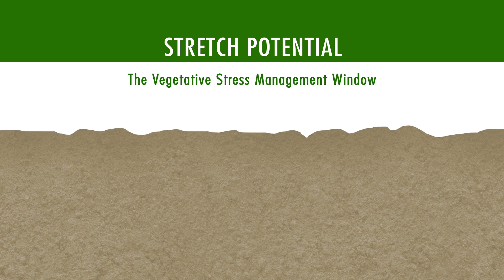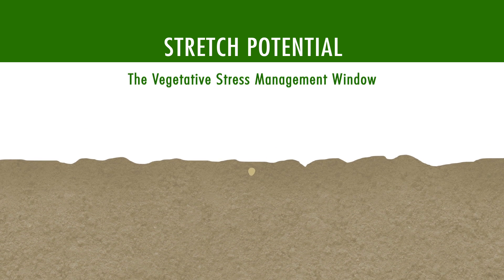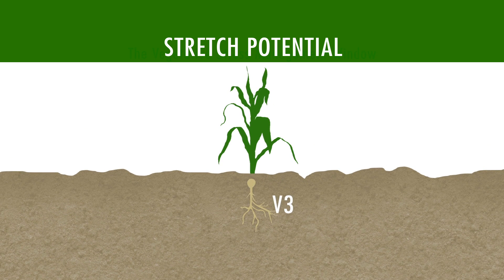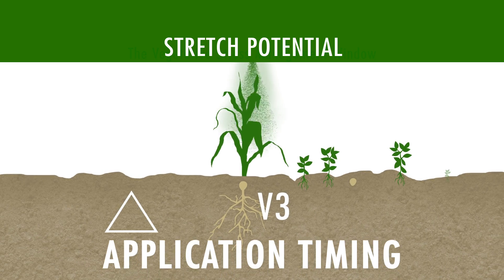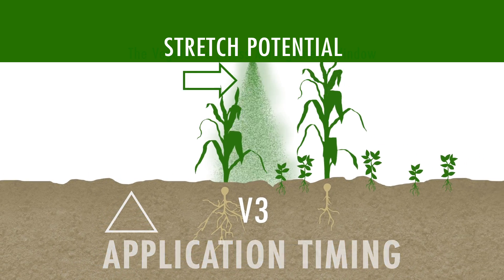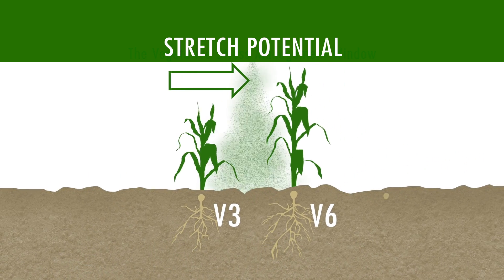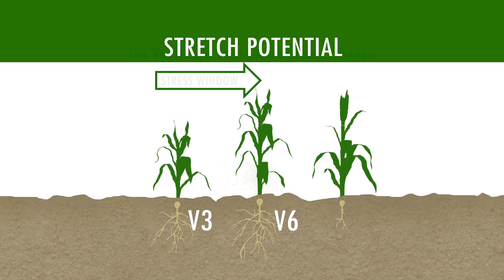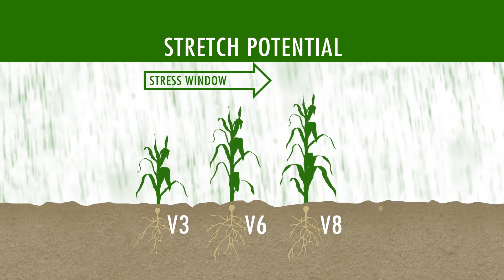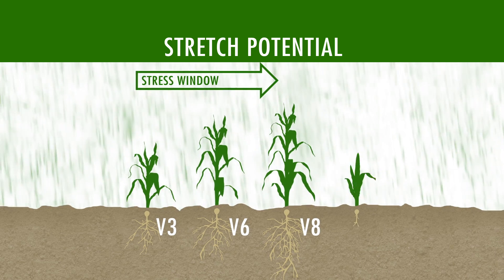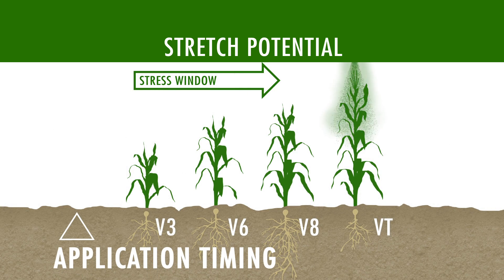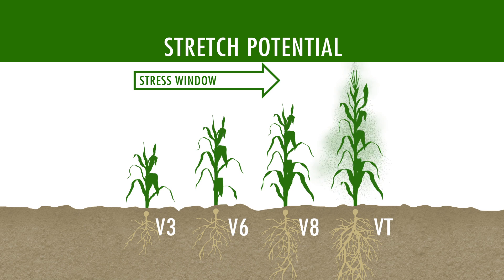The vegetative stress management window is the longest and most complex. Here we focus specifically on promoting plant growth and limiting weed competition to minimize stress. Increasing nutrient uptake and transport in the plant is crucial. Drought tolerance is also augmented and herbicide stress is reduced to promote faster growth. By managing this critical stage correctly, we can increase yield by producing more kernels on each ear.